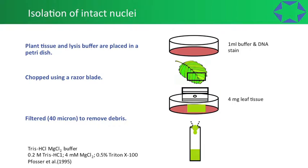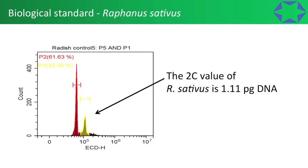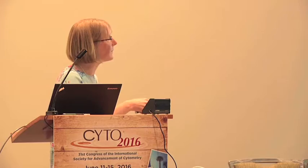We used many different buffers and processes until we got something we were happy with. From this we were able to compare the data to a biological standard — radish — and compare the DNA peaks. We found that Echeveria had greater DNA content compared to radish. Within the samples we were looking at, the student was able to identify subspecies, and that work is still ongoing as the master's project has been taken from one year to the next.